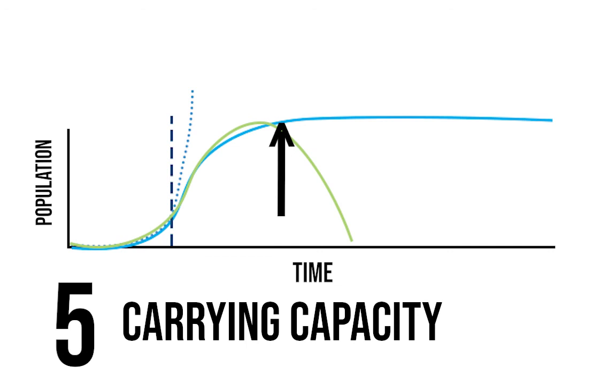So those are some of the different ways populations can increase, decrease, and reach a balance. Thank you.